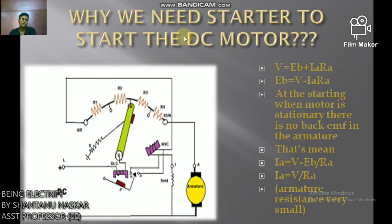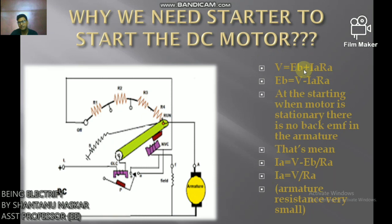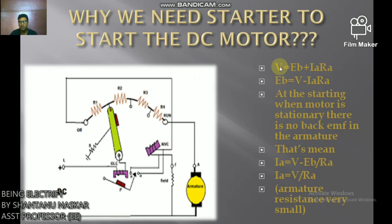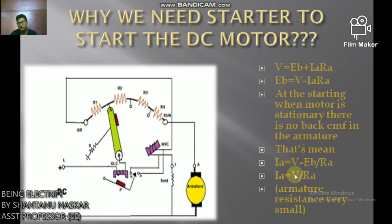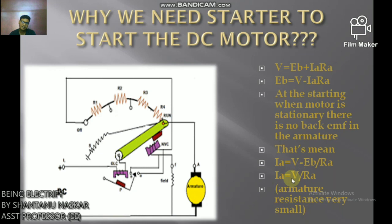First we need to know why we need a starter to start the DC motor. The equation for DC motor is: V = EB + IA × RA, where V is the terminal voltage, EB is the back EMF, IA is the armature current, and RA is the armature resistance. From this, IA = (V − EB) / RA. At starting, when the motor is stationary, there is no back EMF, and armature resistance is very small.